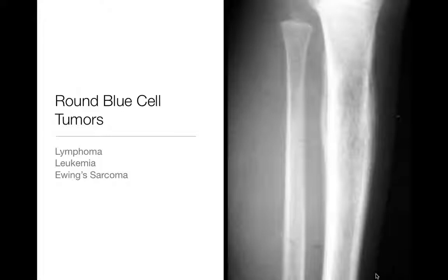Round blue cell tumors, which include lymphoma, leukemia, and Ewing sarcoma, will pretty much all look alike, and it's probably impossible to differentiate them radiographically. They are going to be infiltrating tumors that grow throughout the bone and classically appear as permeative lesions.